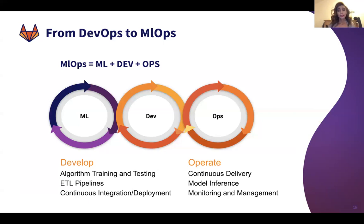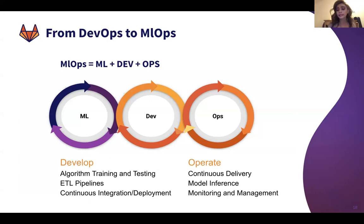To look at the triple infinite loop that is MLOps: the dev part looks into algorithm training and testing, ELT pipelines, continuous integration — mainly looking into the data. The operations part looks into the continuous delivery of models, the prediction and inference of models, and the monitoring and management of that.